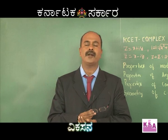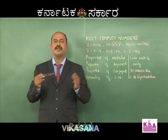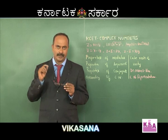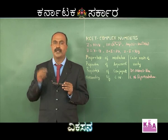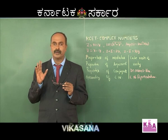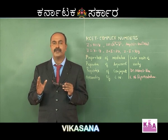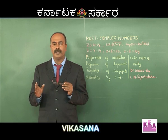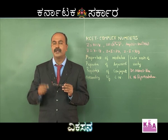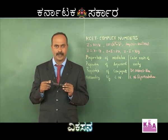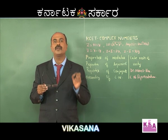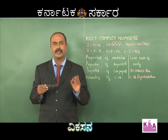If |z| = R, since |z| = √(x² + y²), then x² + y² = R², which represents a circle with center at the origin and radius R. If arg(z) = θ, then tan⁻¹(y/x) = θ, so y = x·tan θ, which is of the form y = mx. That means arg(z) = θ represents a line passing through the origin.